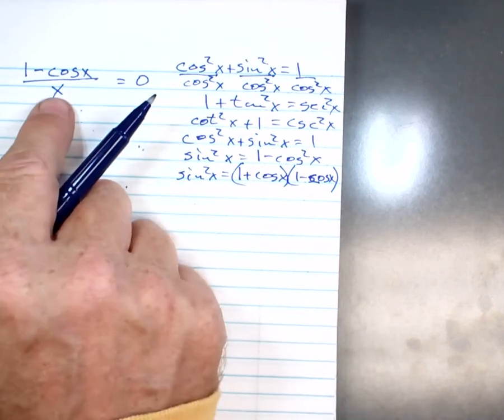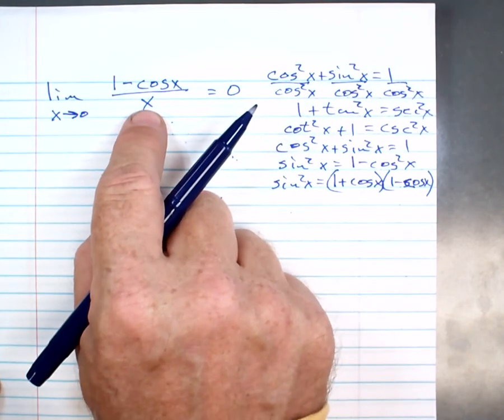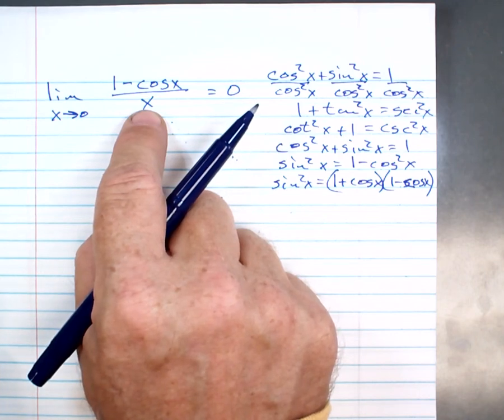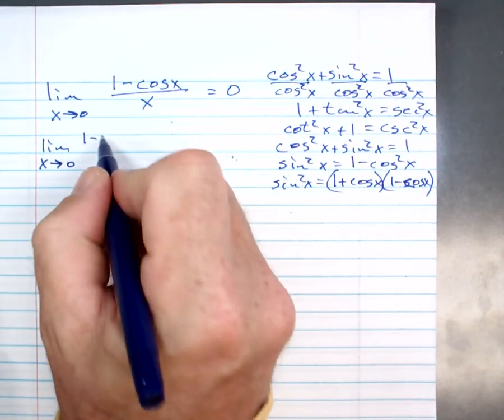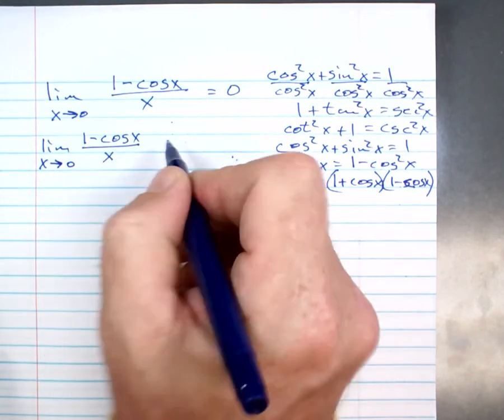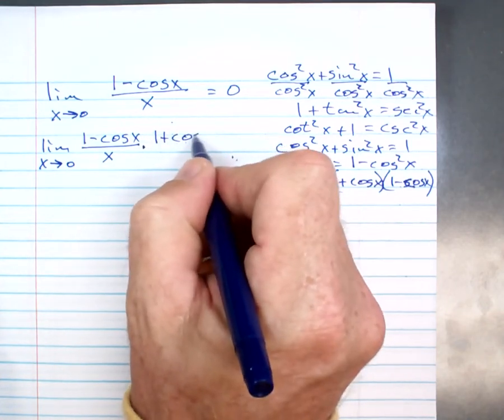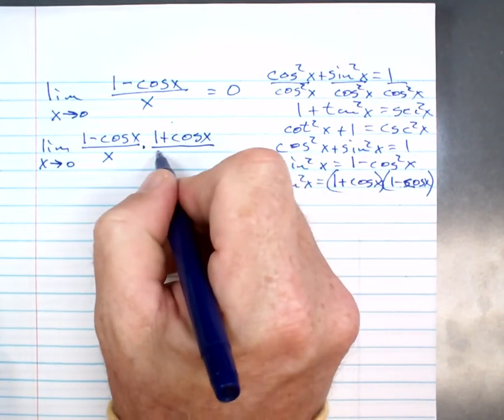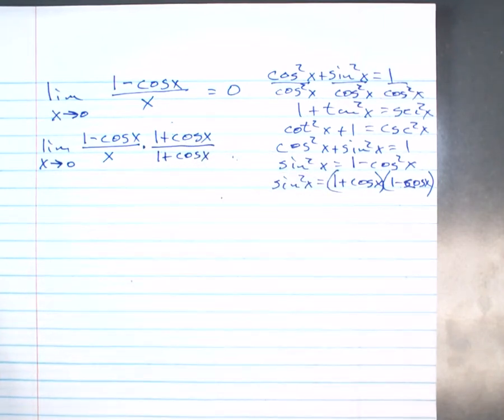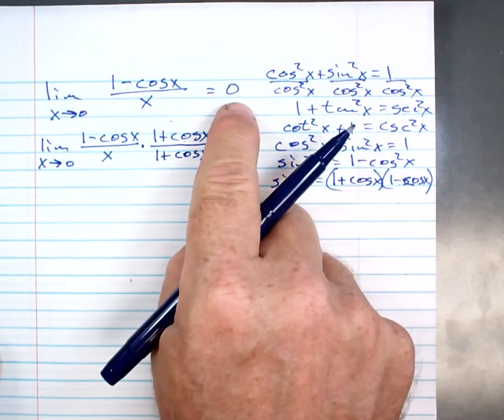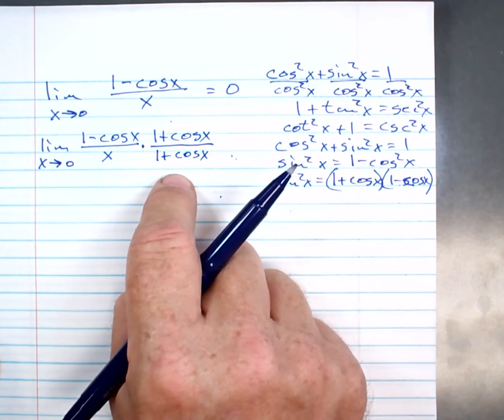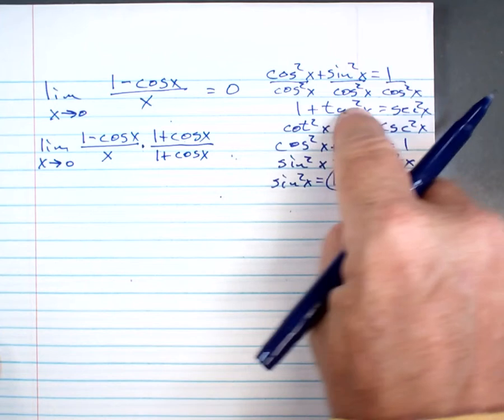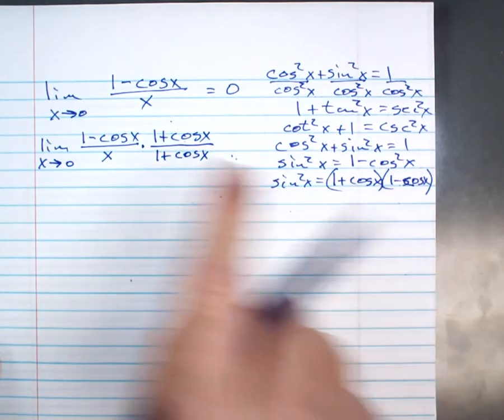So what I'm going to do here is I'm going to multiply this in by its conjugate, which is 1 plus the cosine of x. So it's going to look like this. The limit as x approaches 0 of 1 minus the cosine of x over x times the conjugate, which is 1 plus the cosine of x over 1 plus the cosine of x. Remember, I'm trying to prove this. So this is your first step in the proof, right?